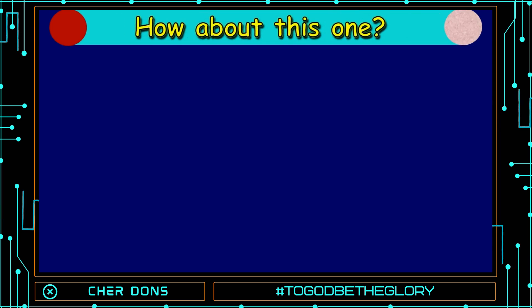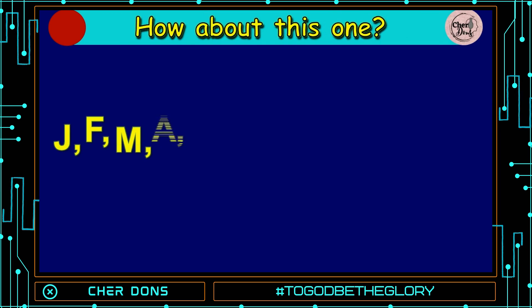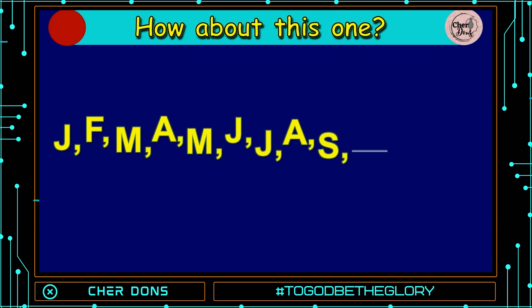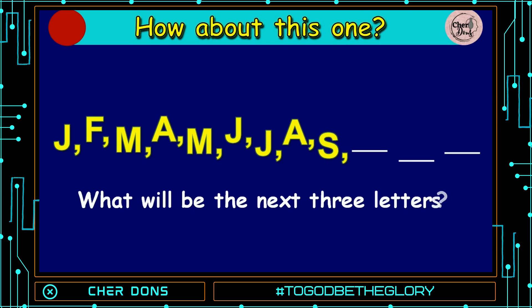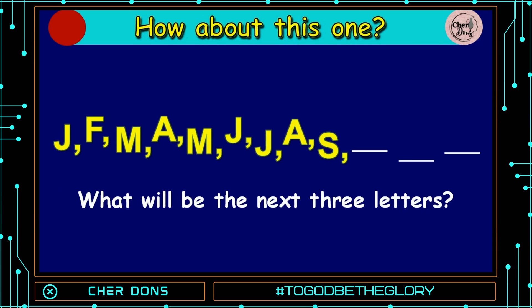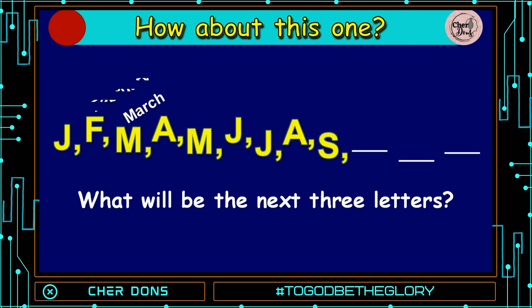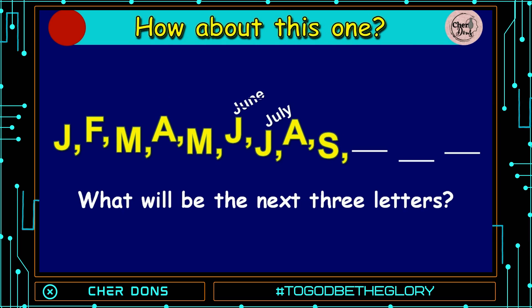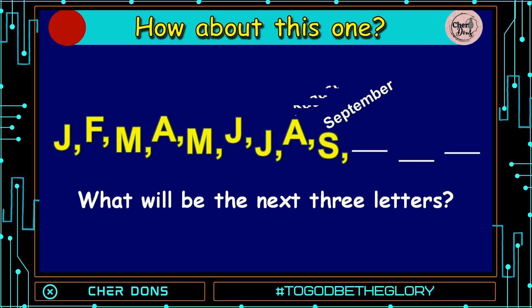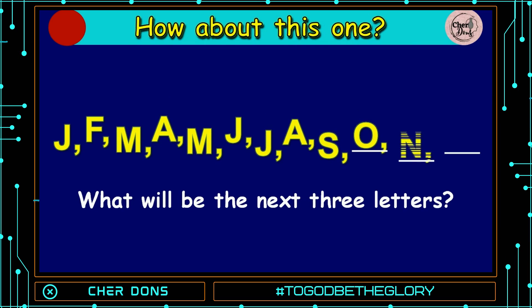How about this one? J, F, M, A, M, J, J, A, S, blank, blank, and blank. What will be the next three letters? J is for January, F for February, M for March, A for April, M for May, J for June, J for July, A for August, S is for September, and the next three letters will be O and D. O is for October, N is for December, and D is December. Did you see the pattern?